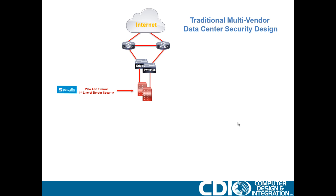These internet edge switches would connect into your firewalls — in this case, Palo Alto firewalls providing that first line of border security. The outside interfaces of the Palo Alto firewalls, also known as the untrust zone, would connect into these internet edge switches. Any traffic coming in from the internet is going to be routed through one of the BGP routers, come down through these layer 2 switches and into these internet edge firewalls. The Palo Altos would filter out the noise — with next-generation features you can look at threats, viruses, malware, vulnerabilities, zero-day protection, and URL filtering.